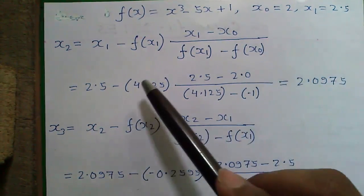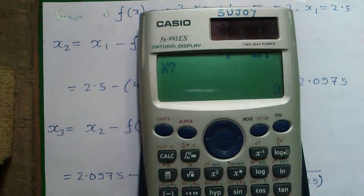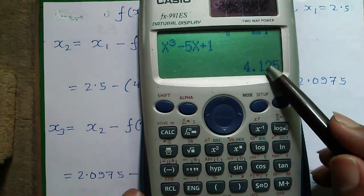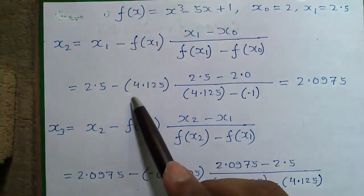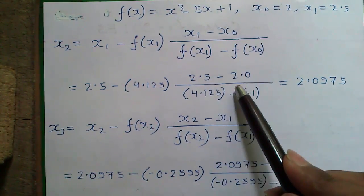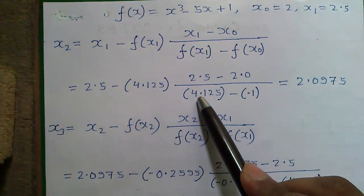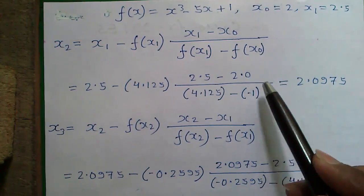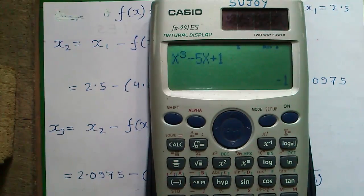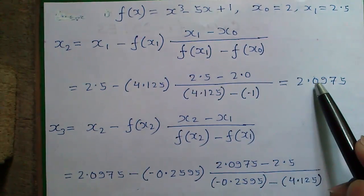x₁ = 2.5 - f(x₁) which you can find x is now 2.5. That is press x³ button that is 4.125 into x₁ that is 2.5 - x₀ that is 2.0 divided by f(x₁) that is 4.125 - f(x₀). For f(x₀) enter x = 2 you will get -1 that is -1 which gives us 2.0975.